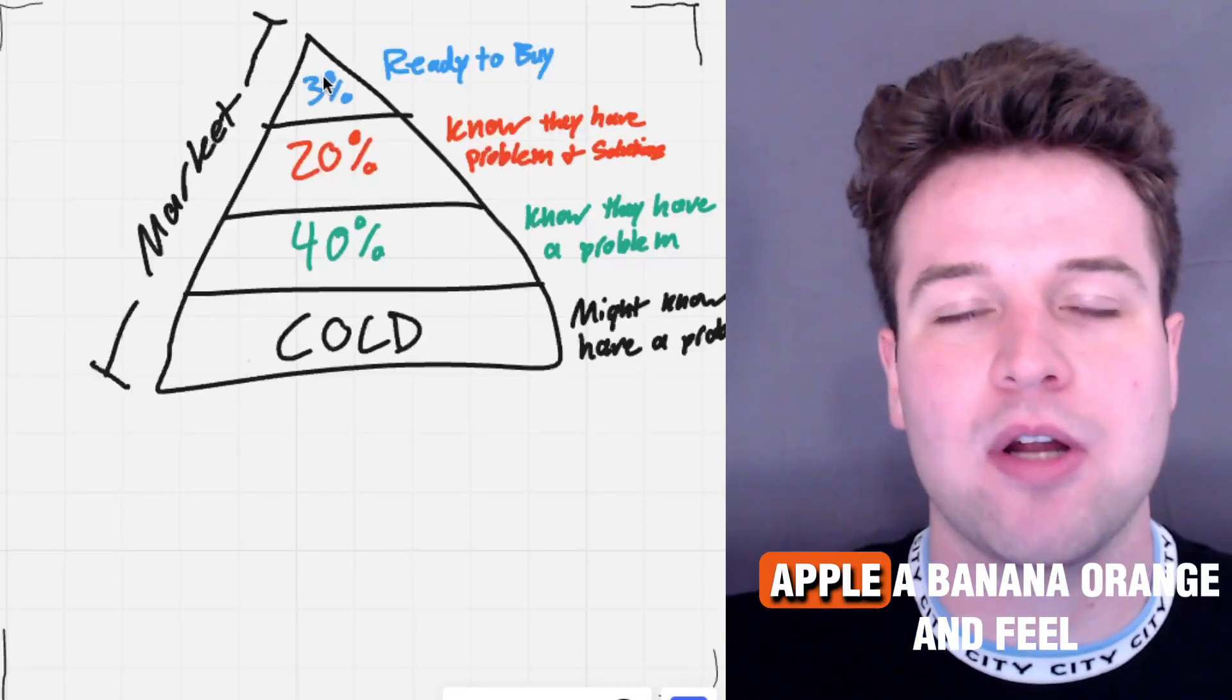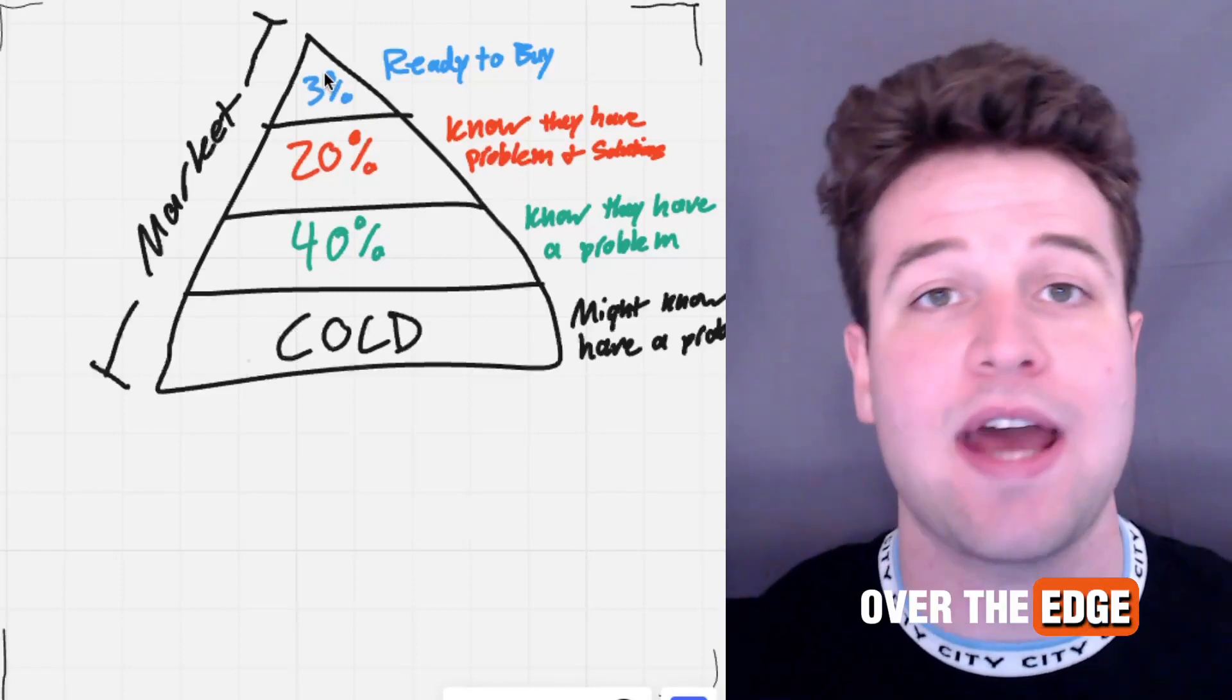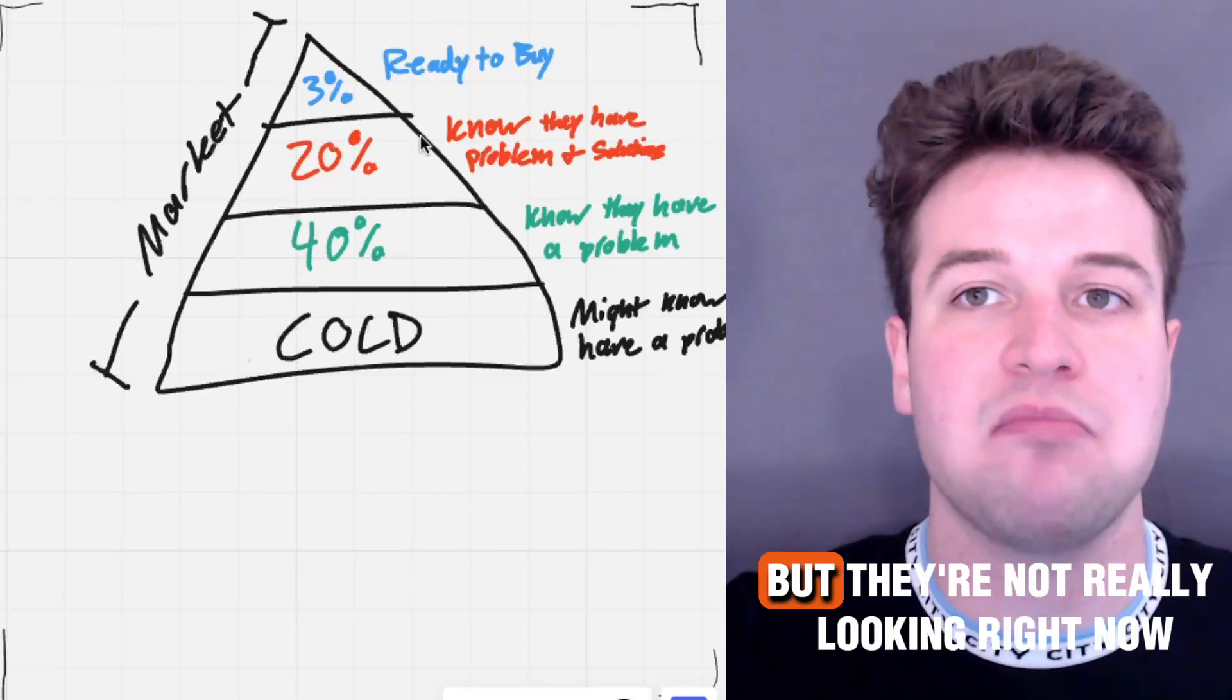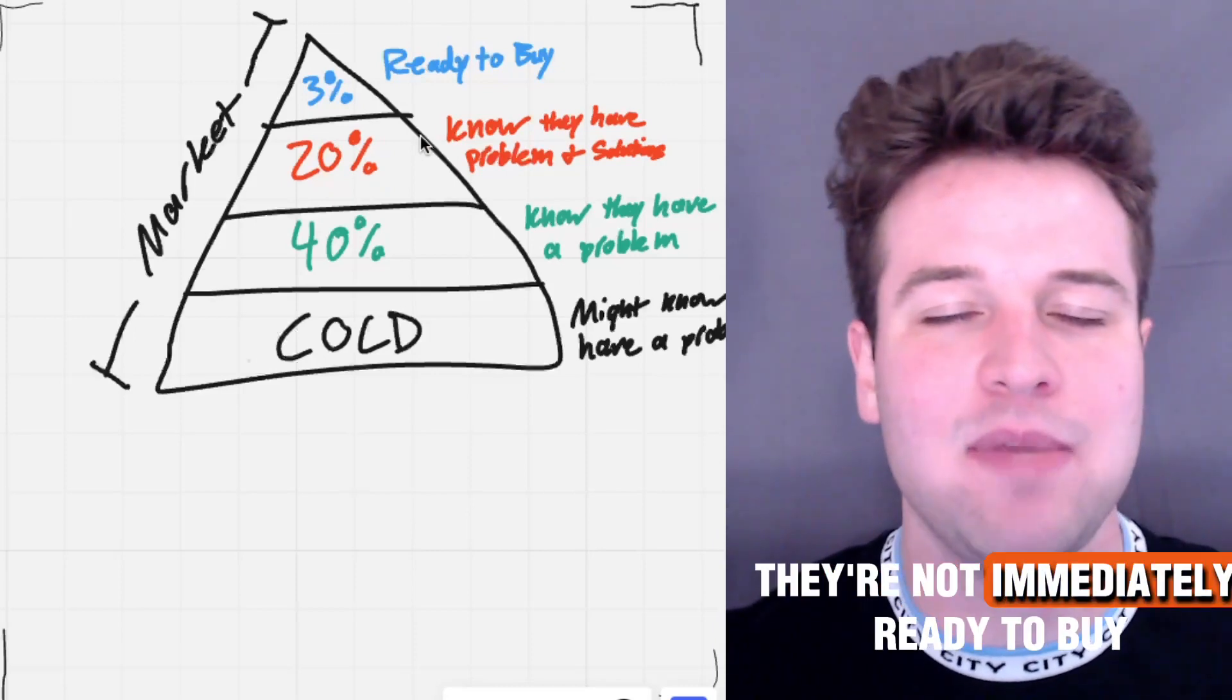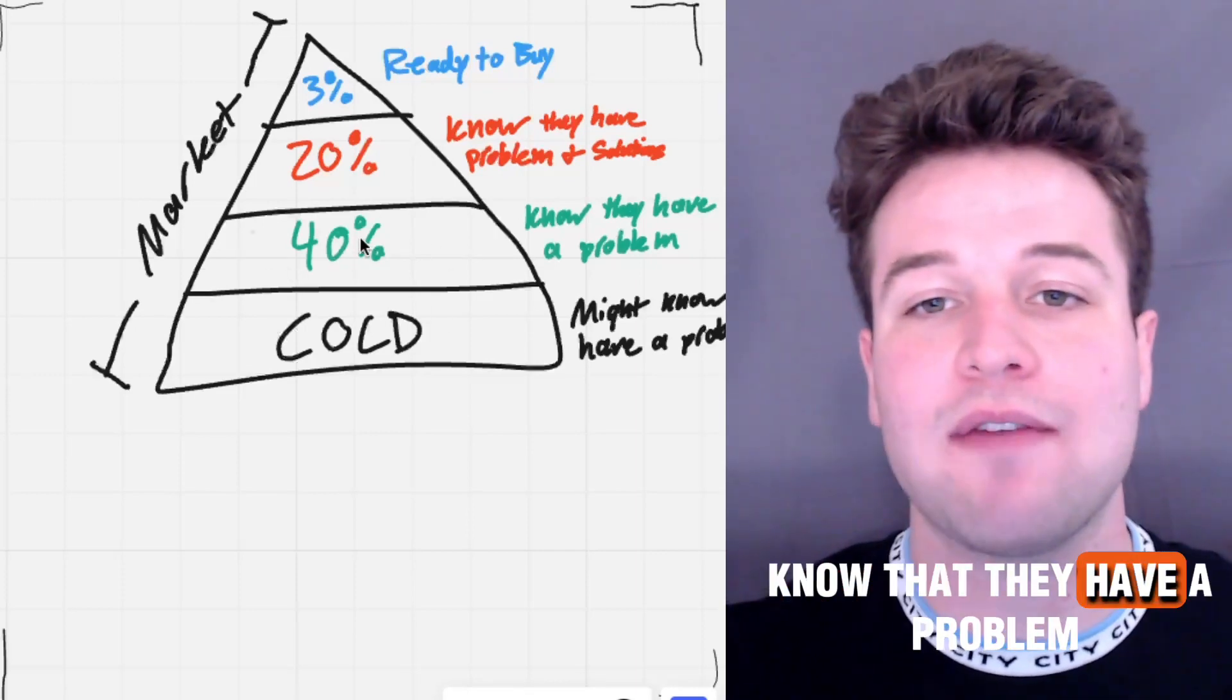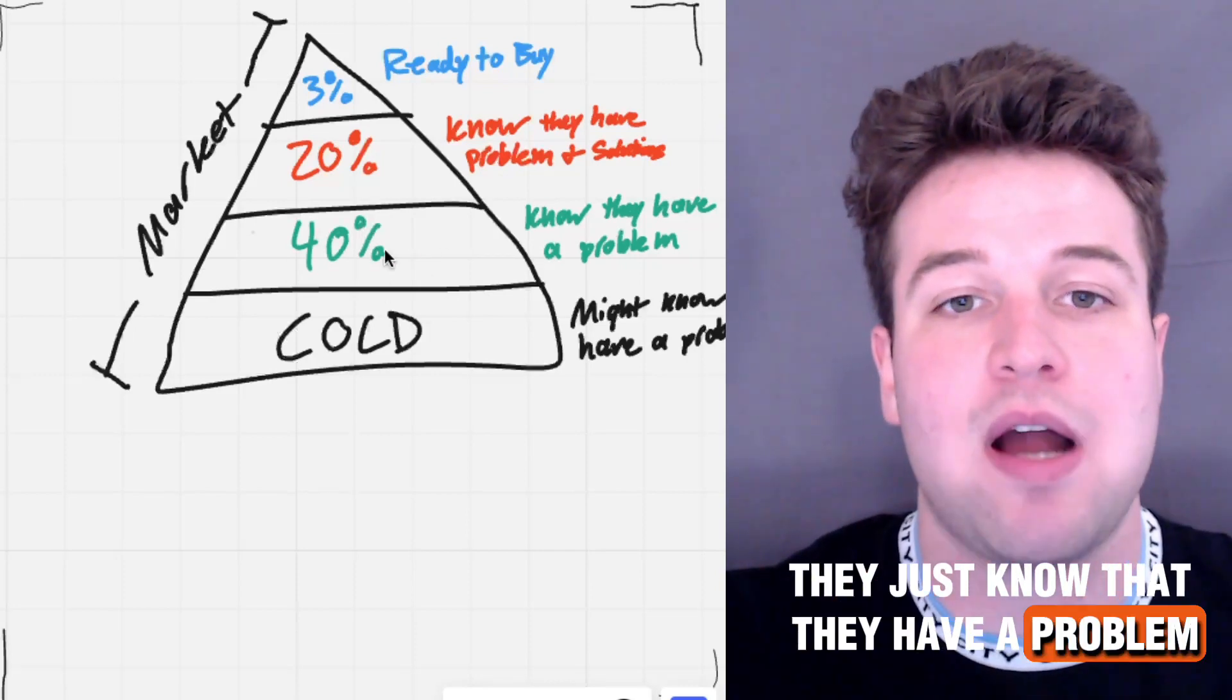And so at the very top, 3% of people are immediately ready to buy at any point. These are people who they just need to see an ad and they'll be pushed over the edge. These people right here, they know that they have a problem and they know their solutions, but they're not really looking right now. They're not ready to buy. They're not in front of their computer. They might be driving. They're not immediately ready to buy. It's not that pressing. These people know that they have a problem, but they aren't looking for solutions. They don't know that there are solutions. They just know that they have a problem.